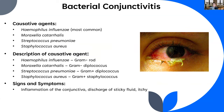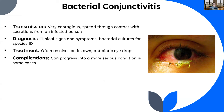The most common causative agent is actually a gram-negative rod called Haemophilus influenzae. Other bacterial species include Moraxella catarrhalis (gram-negative diplococcus), Streptococcus pneumoniae (gram-positive diplococcus), and Staphylococcus aureus (gram-positive Staphylococcus). Signs and symptoms: we know what pink eye looks like - inflammation of the conjunctiva, discharge of sticky fluid, itchiness. You wake up with the feeling your eye is glued together because of secretions. It's usually pretty obvious when somebody has conjunctivitis, and it is incredibly contagious - don't go near people if you have it.